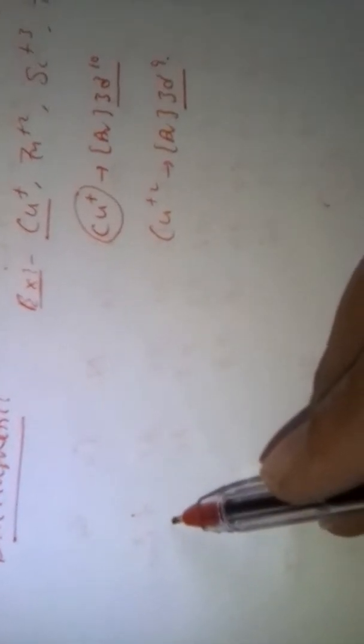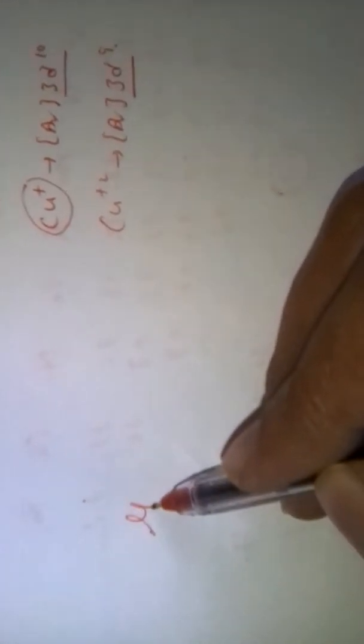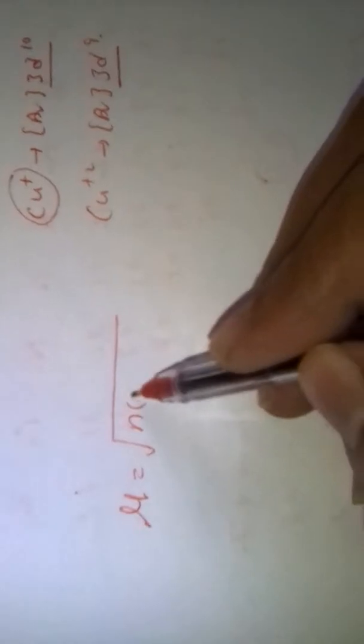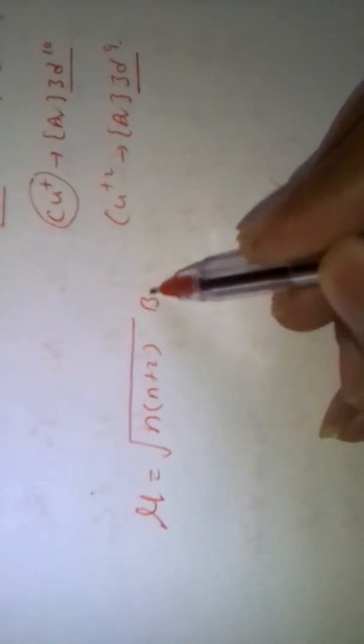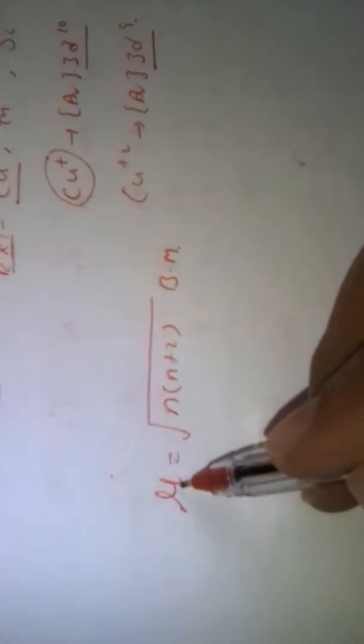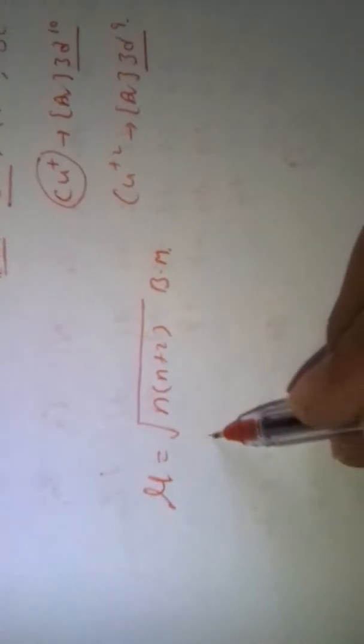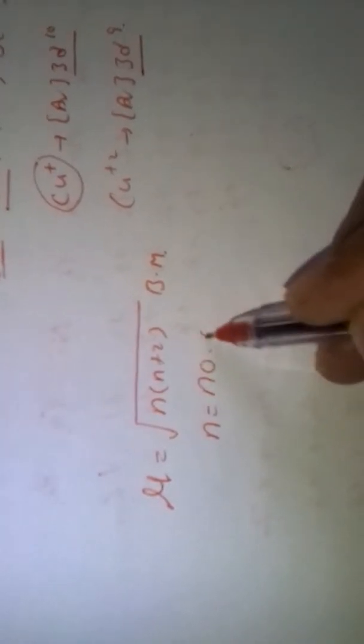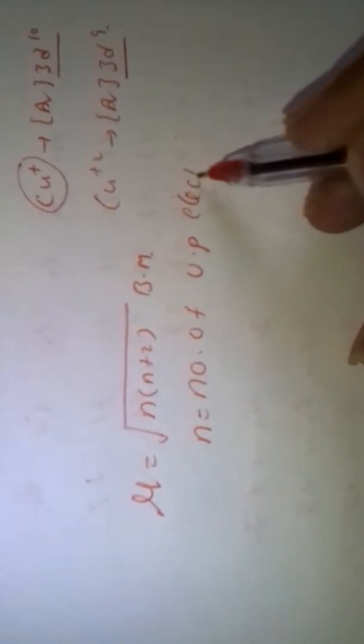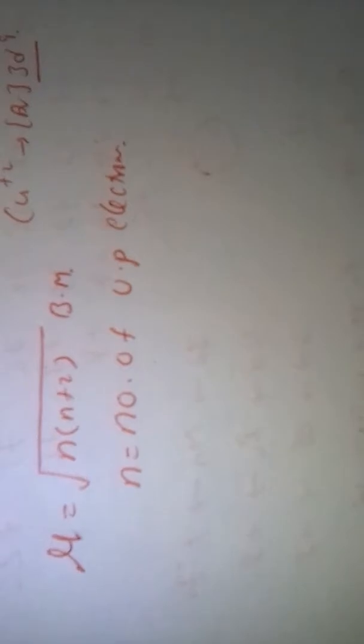We can calculate the magnetic moment for these species. The magnetic moment mu is equal to the square root of N(N+2) Bohr magnetons, where mu is the magnetic moment and N is the number of unpaired electrons.